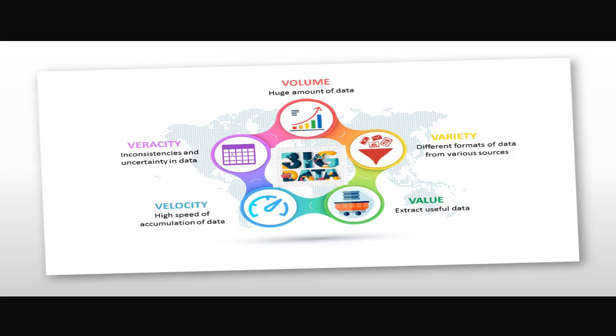If you have Big Data, you can describe it using 5 V's: Volume, Velocity, Variety, Veracity, and Value. For example, comparing this to Facebook — the Big Data volume size is 500 petabytes. Velocity is the speed at which data is generated — it is very fast. Variety is the different types of information — likes, comments, and other interactions. And lastly, it has a lot of business Value.